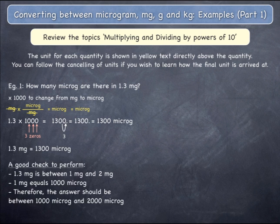A good final check to perform is to look at your starting quantity of 1.3 milligrams, which is between 1 milligram and 2 milligrams. 1 milligram equals 1,000 micrograms, and therefore you expect an answer of between 1,000 micrograms and 2,000 micrograms.